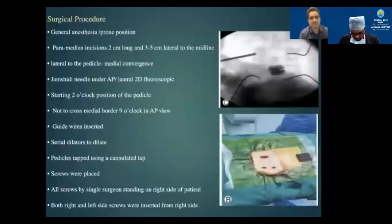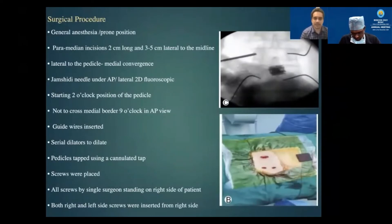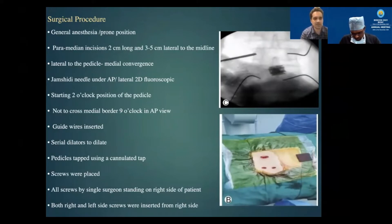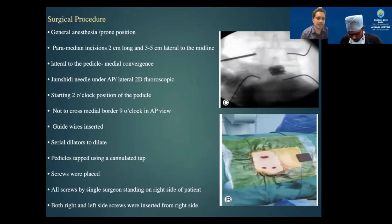The surgical procedure is performed under general anesthesia in the prone position. A paramedian incision is made 3 to 5 cm lateral to the midline and lateral to the pedicle to give medial convergence. Using a Jamshidi or Cook's needle, we start at the 2 o'clock position of the pedicle and make sure we do not cross the medial border at 9 o'clock in AP view so as not to cross the medial border of the pedicle.